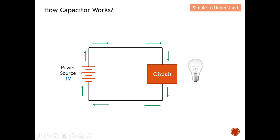Now let's consider the opposite case — a lower power source of 1 volt. Because of the low voltage, the current is also drastically reduced. In this case, the current is not enough to drive the circuit, and therefore the LED is not able to light up. Earlier a higher voltage killed the circuit; now a lower voltage can't generate enough current to power the circuit and the LED fails to light up.